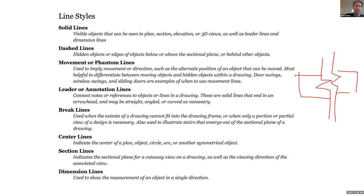Section lines indicate cuts or references. If we have a plan with a section line in it, we understand there's a drawing that relates to where that line is and where the building has been cut to show that particular drawing. And then we also have dimension lines, which are similar to leader and annotation lines.